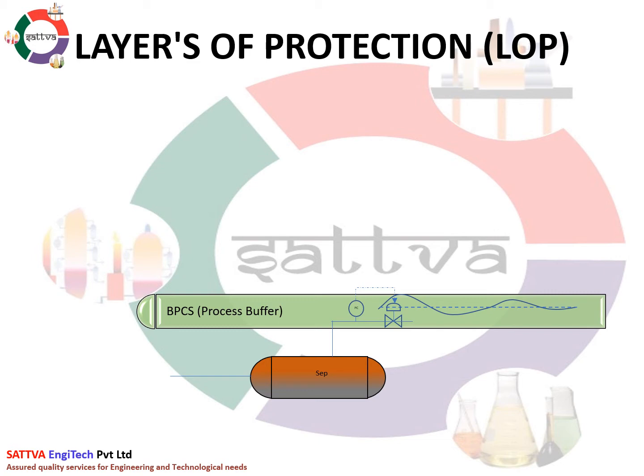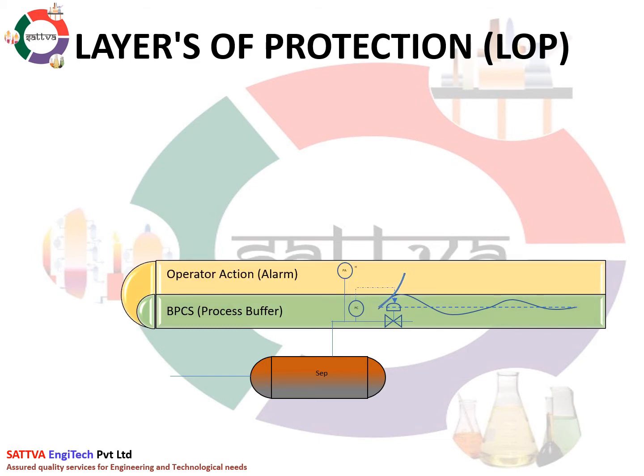If this layer fails, then the second layer of protection by method of alarm is used, wherein the alarm alerts the operator to act. This layer is critically assessed for effectiveness in alarm rationalization or review study.